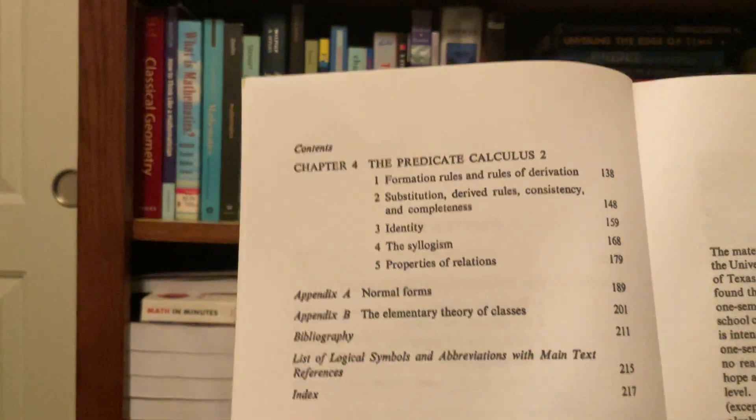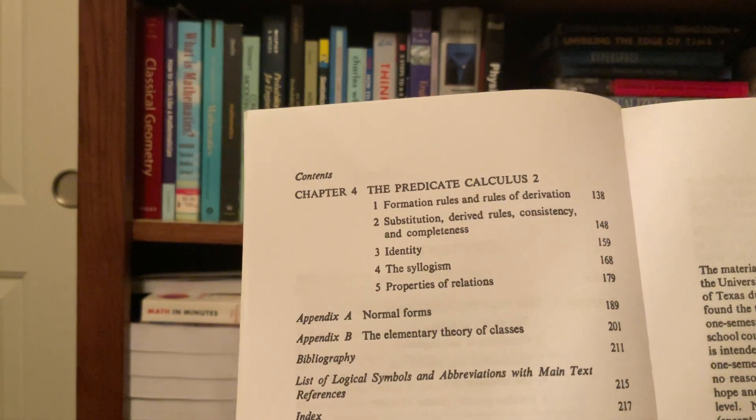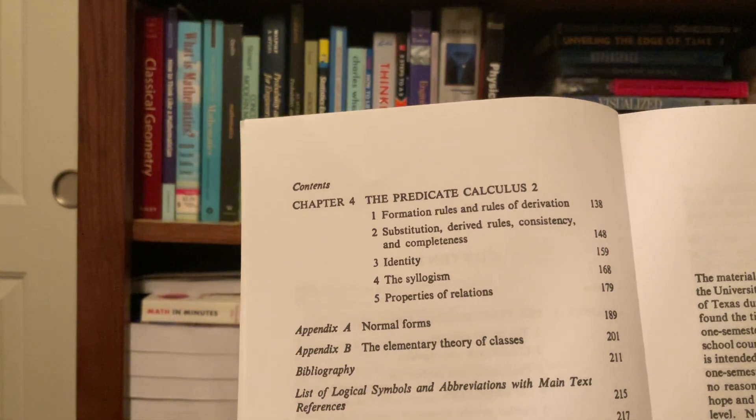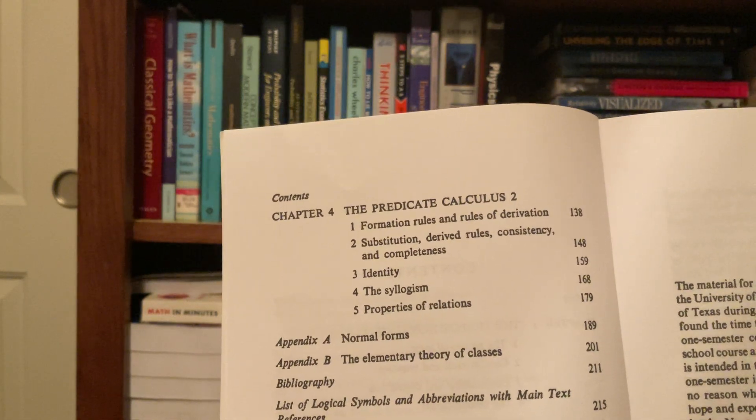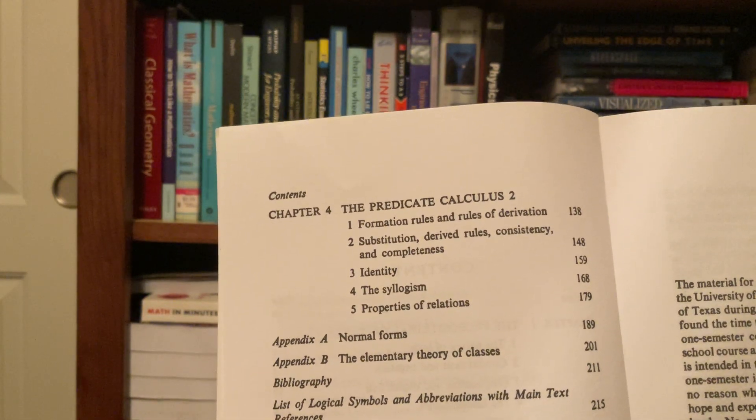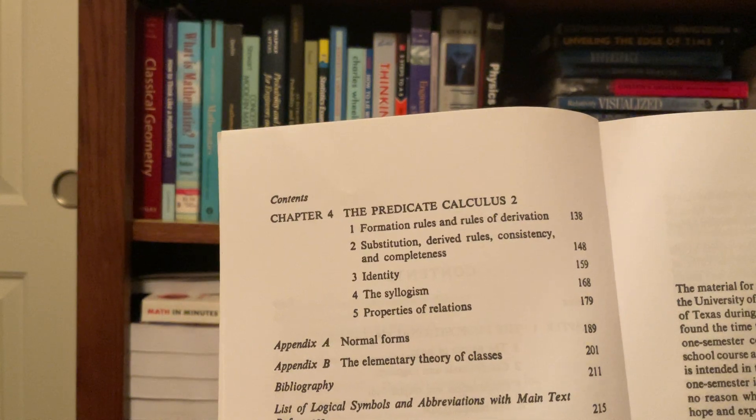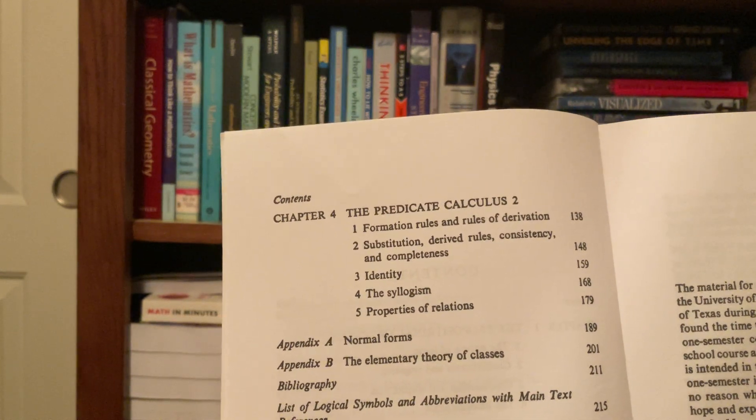And then chapter 4 is on predicate calculus 2: formation rules and rules of derivation, substitution, derived rules, consistency and completeness, identity, the syllogism, and properties of relations.